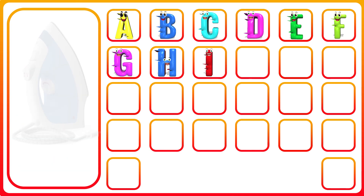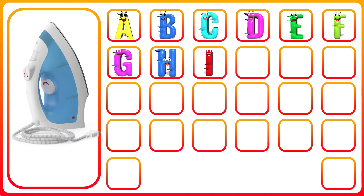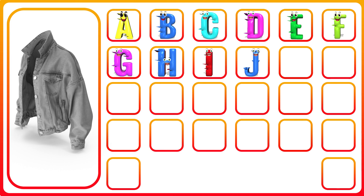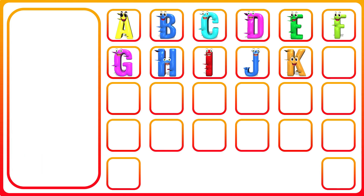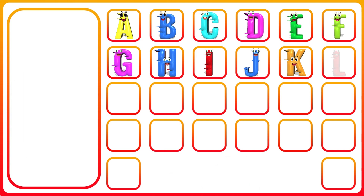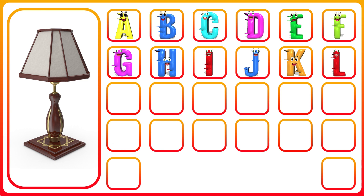I. I for iron. J. J for jacket. K. K for kiwi. L. L for lamp.